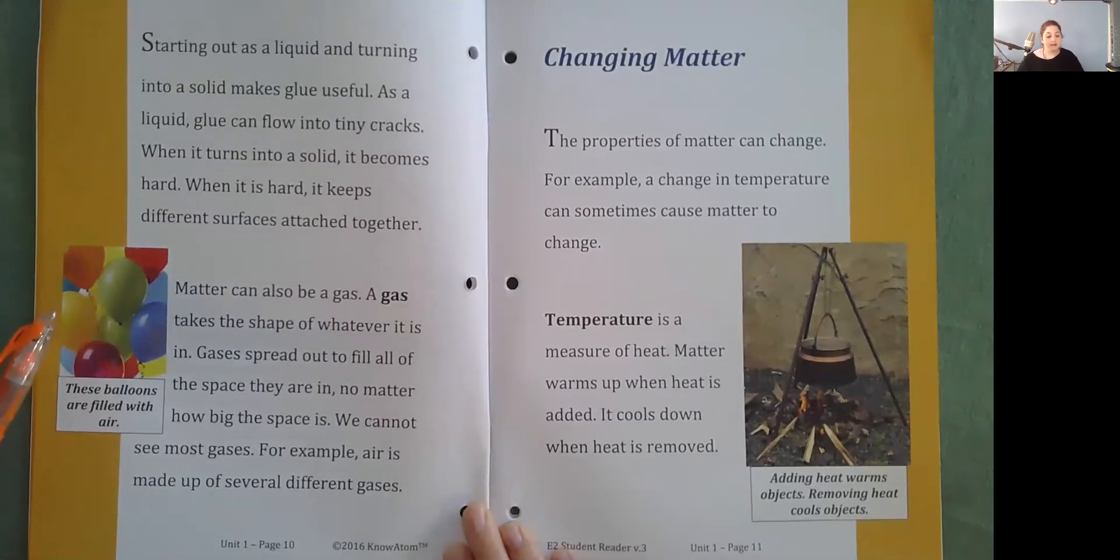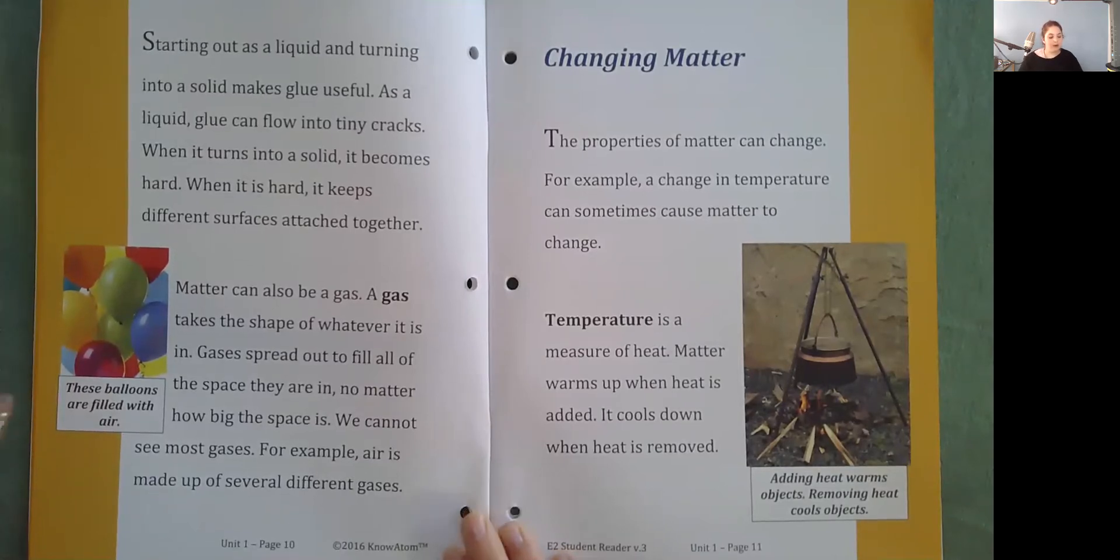Matter can also be gas. A gas takes the shape of whatever it is in. Gas is spread out to fill all of the space they are in, no matter how big the space is. We cannot see most gases. For example, air is made up of several different gases. So these balloons are filled with air.